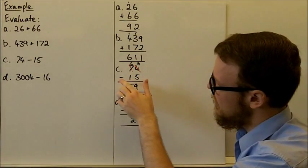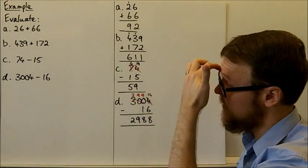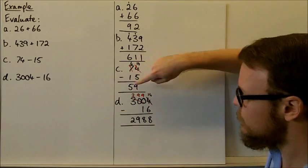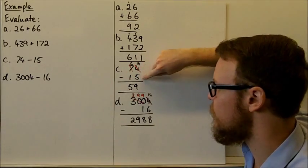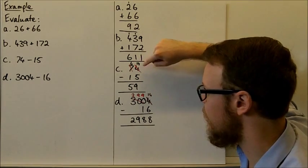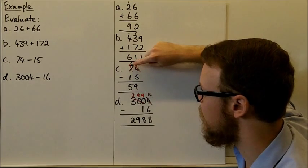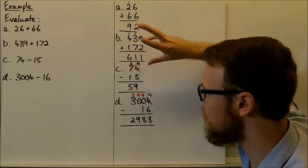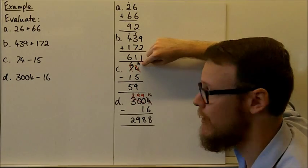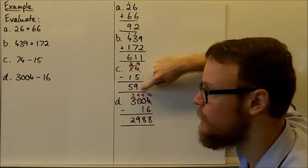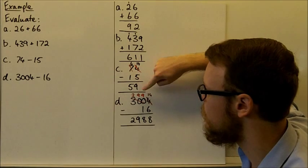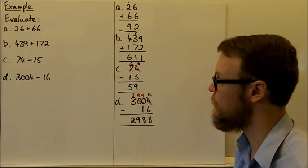Here, we've got 74 minus 15. Now, 4 minus 5 is going to be less. So we've arranged it. We're looking at the ones, but if I try and subtract 5 away from 4, I'm going to get less than 0. So I need to do the rearranging again. So the 7 becomes a 6. I'm going to take that one place value, and I'm going to add that one place value onto my 4, so I get 14. So 14 take 5 is 9. Now I'm left with my 6 here. So 6 minus 1 is 5. So 74 minus 15 is 59.